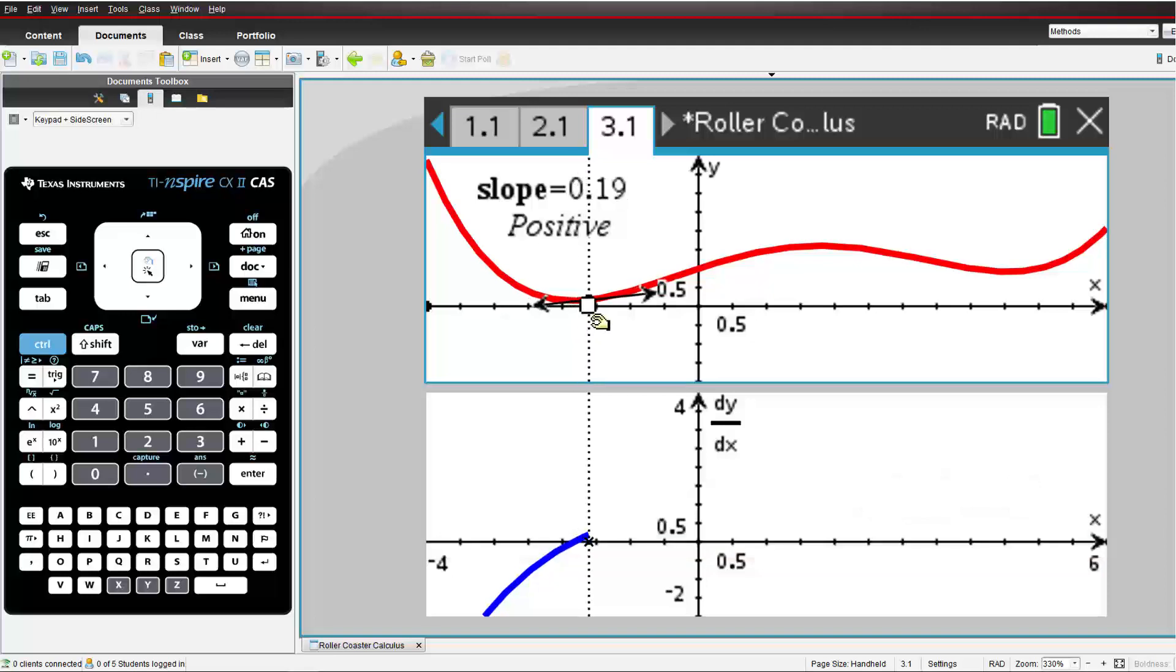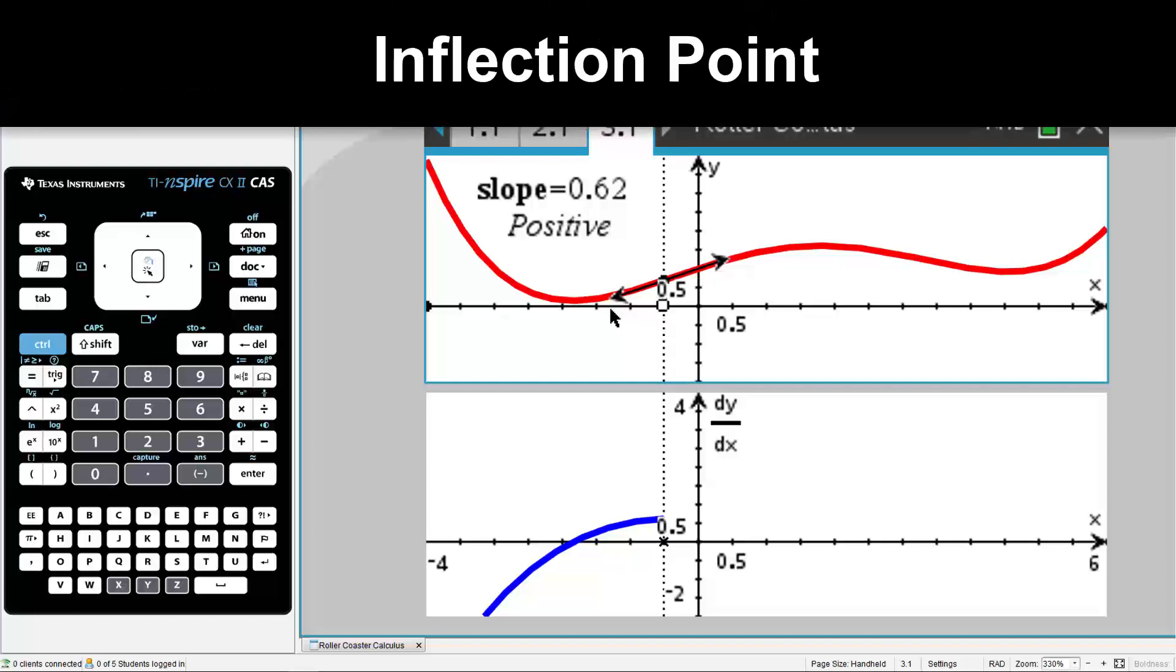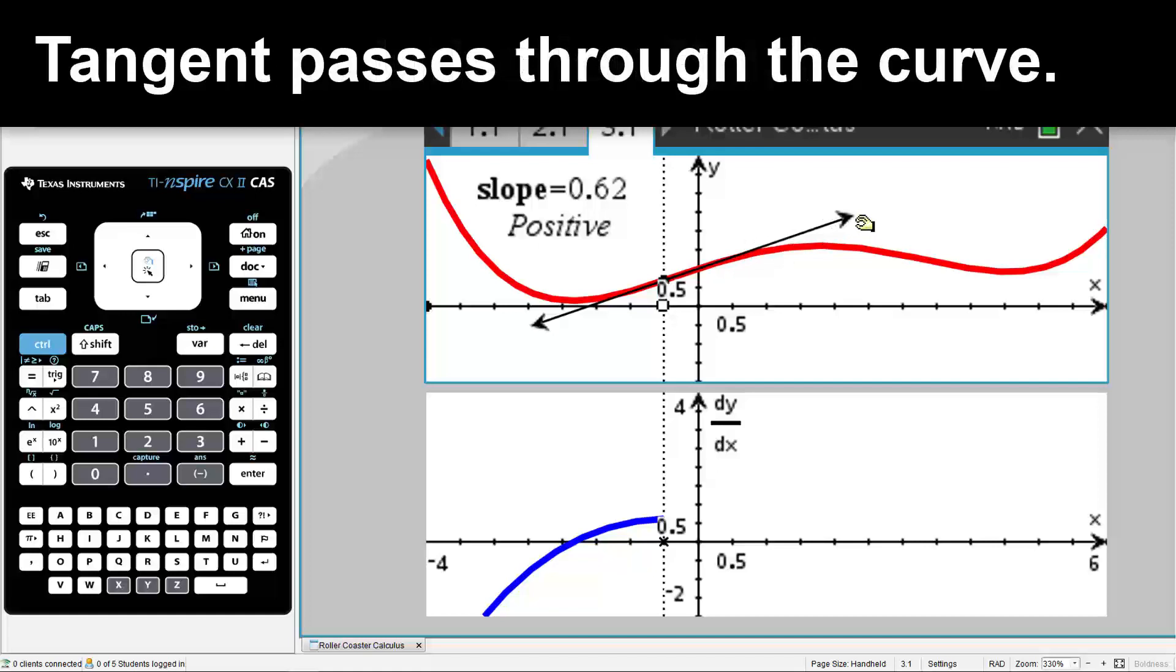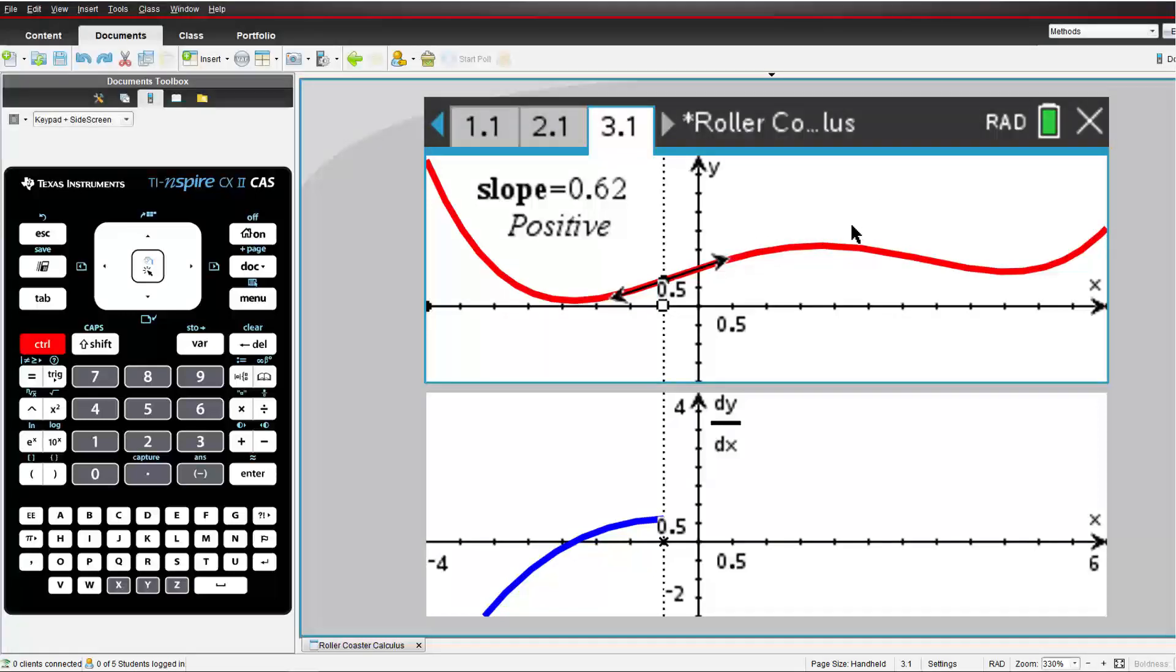Our derivative function reaches a maximum somewhere between the two turning points on the original curve. This is a point of inflection, a point where the tangent passes through the curve. We have reached the steepest part of the curve between the two turning points.